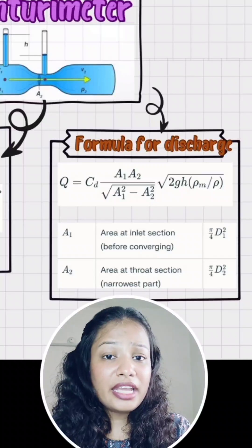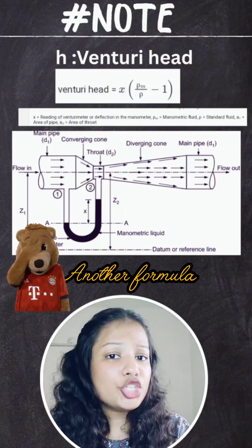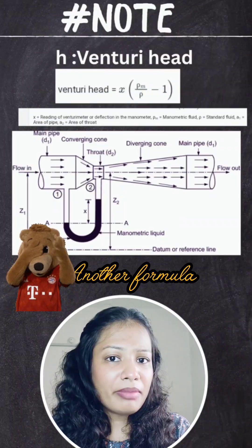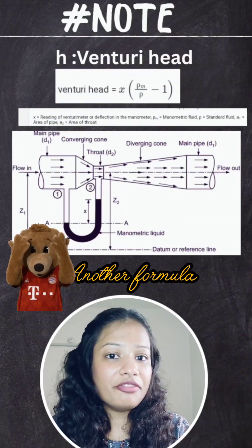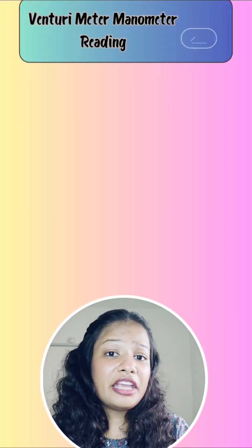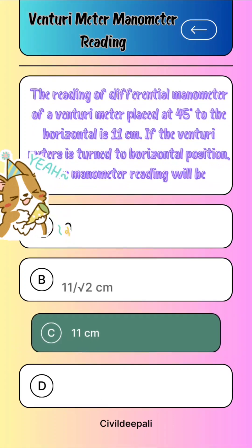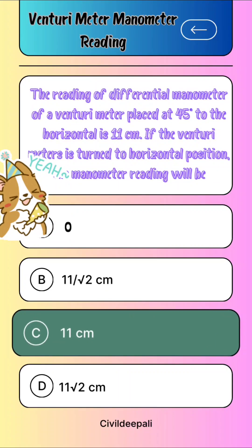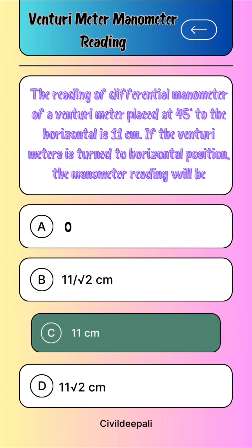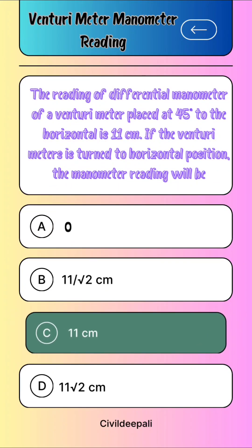And finally, how to find the head, which is the Venturi Head. The Venturi Head is determined by the Manometric Differential Reading. And if the orientation of the Venturi Meter is changed from horizontal to inclined, there will be no change in the Manometric Differential Reading — it does not depend on the orientation of the Venturi Meter.